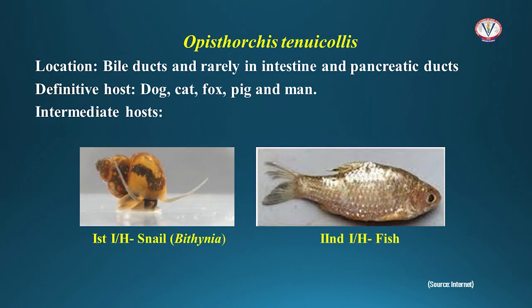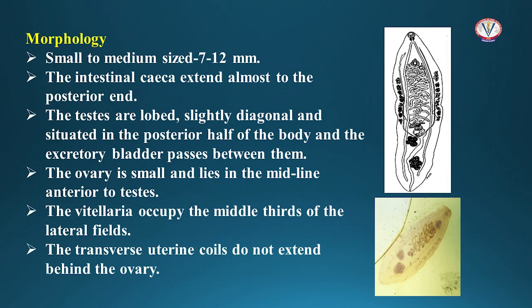Opisthorchis stenicollis is present in the bile duct, rarely the intestine and pancreatic duct, of dog, cat, pig, and even man. The first intermediate host is a snail of the genus Bithynia, and the second intermediate host is fish. These are small to medium-sized flukes around one centimeter long. The intestinal caeca extend almost to the posterior end. The testes are lobed, slightly diagonal, and situated in the posterior half of the body. The excretory bladder passes between the testes. The ovary is small and lies in the midline anterior to the testes. The viteline glands occupy the middle third of the lateral fields.